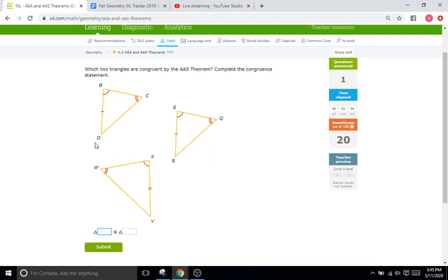So now we just got to write out the statement. We'll start down here at the point, then move up and then move right. Since both triangles are oriented the same way, it's pretty easy. So we'll go D, B, C, and then we'll go R, S, Q.